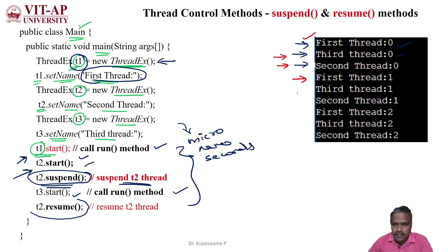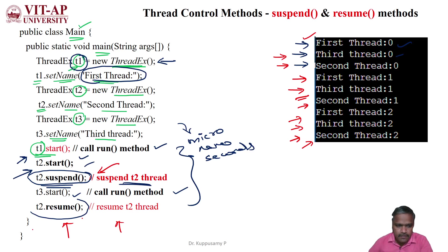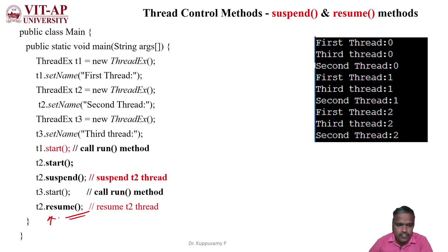Then again the first thread gets its turn, followed by the third thread, and you can see the second thread gets its turn last. In this meantime t2 is suspended for a while, and within microseconds we are resuming it. That is why the second thread continues executing in every iteration — whenever the CPU is idle it is allocated to t2 within microseconds. The suspended thread is resumed using the resume method, and you can use the suspend method to suspend it.